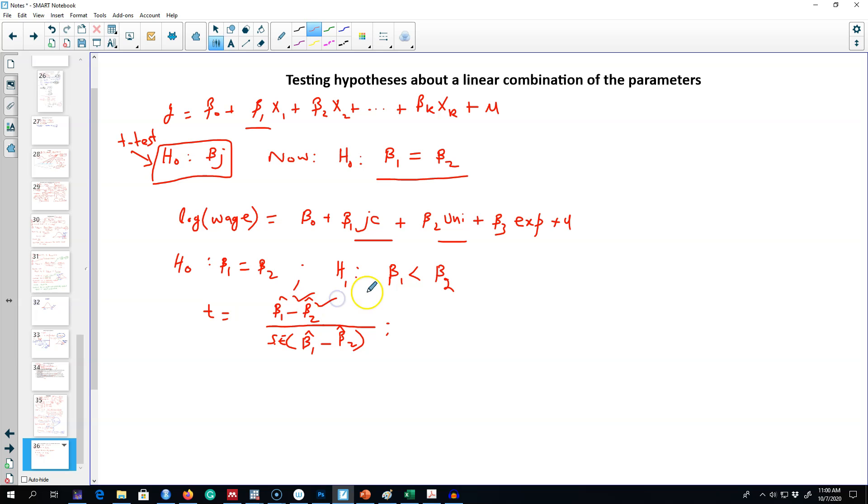Because we already have these two coefficient values from our regression output and we'll have standard errors from the regression output as well. But it is not as straightforward as it looks because of this standard error term.